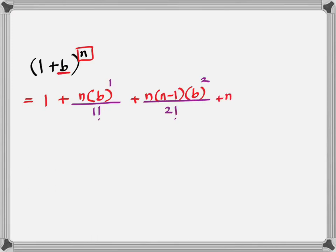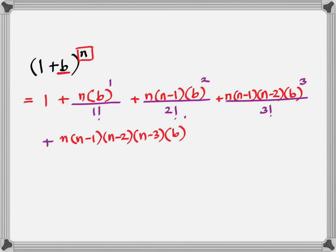Can you see a pattern developing? What do you think is the next term? N(N - 1)(N - 2)·B^3 over 3 factorial. And so on. N(N - 1)(N - 2)(N - 3)·B^4 over 4 factorial.